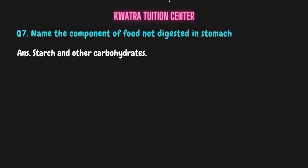Question number seven: name the component of food not digested in the stomach. The answer is starch, and also carbohydrates in general. These are components that cannot be digested in our stomach. You should know the names of these.